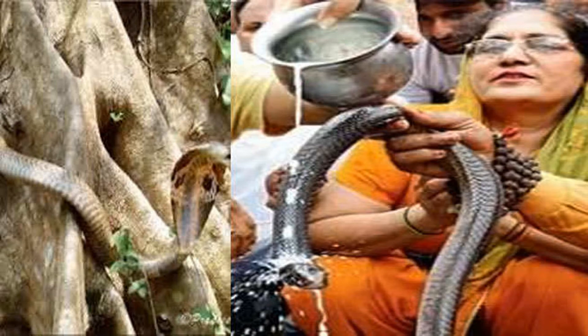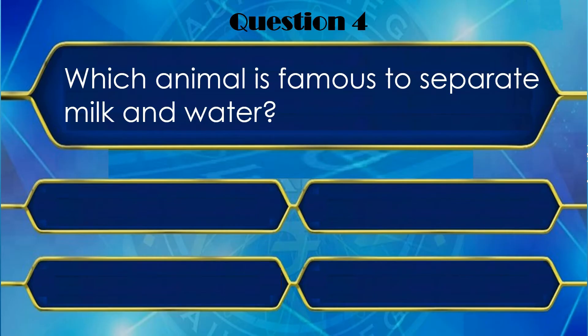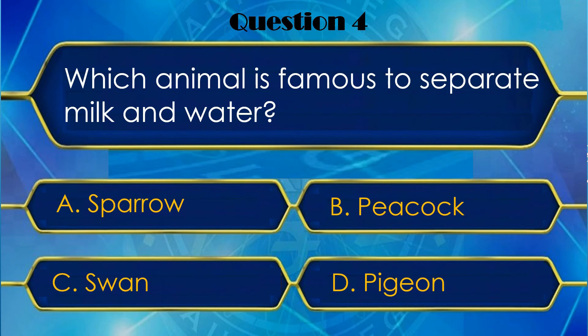Let us move to your next question. And your fourth question is: Which animal is famous for separating milk and water? Kaunsa aisa animal hai jo bahut popular hai ki woh dudh se paani ko alag kar deta hai? And your options are: A. Sparrow, B. Peacock, C. Swan, and D. Pigeon. Swan. Okay, let me check. Yes, Swan is the correct answer.